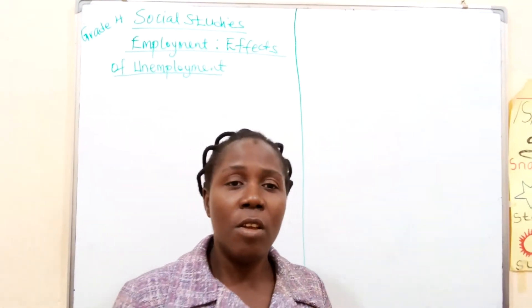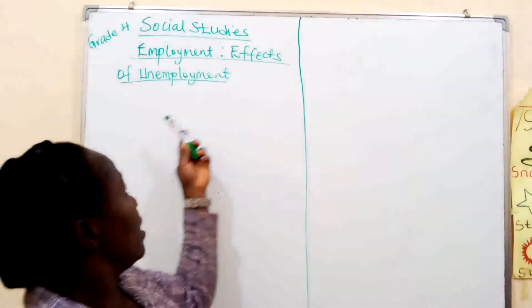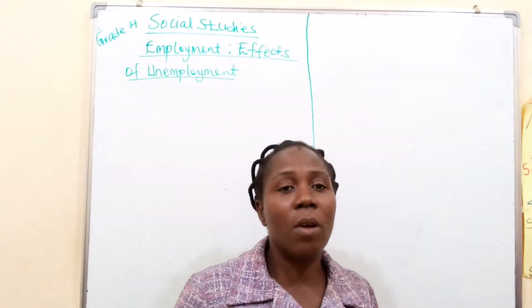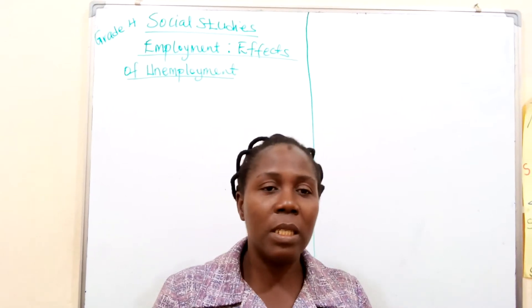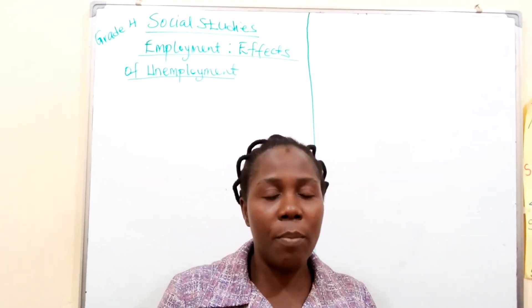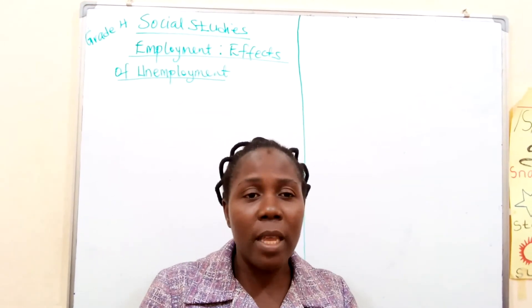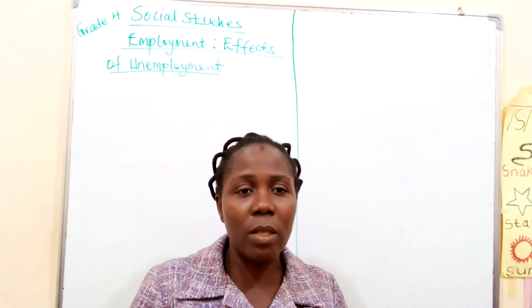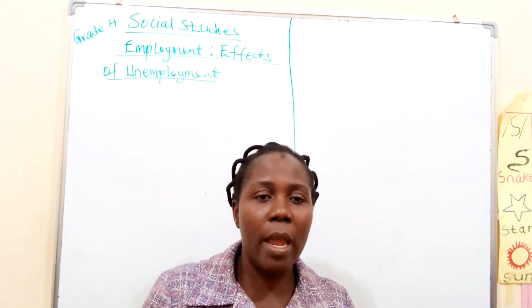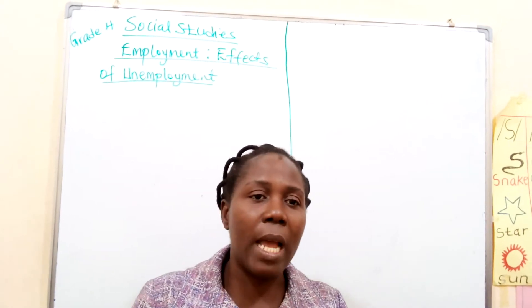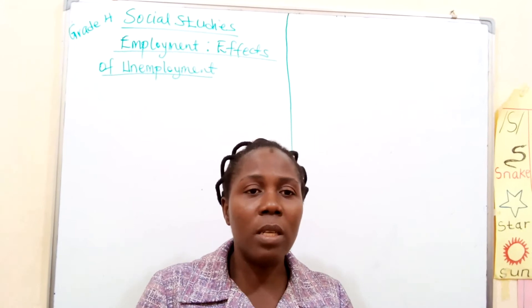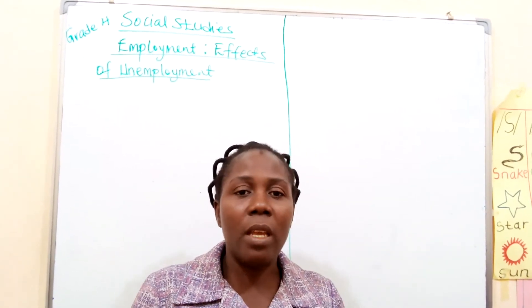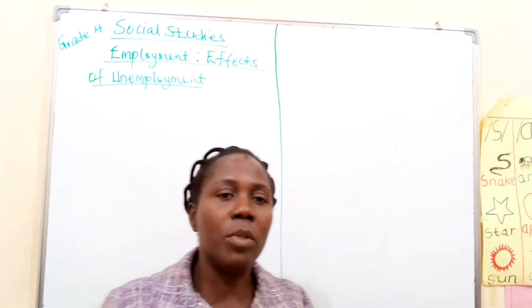The topic we are considering this day is social studies, and this lesson is a continuation of what we learned last time. We talked about employment, and today we are looking at effects of unemployment. We have been talking about employment, unemployment, and underemployment. Employment is when someone has a job to do in order to earn a living or money. Unemployment is a situation whereby one is able and willing to work but cannot secure a job in order to earn a living. Underemployment is a situation or condition in which someone is earning below his qualification or being employed below his qualification, and as such will definitely earn insufficient income to take care of his or her needs.